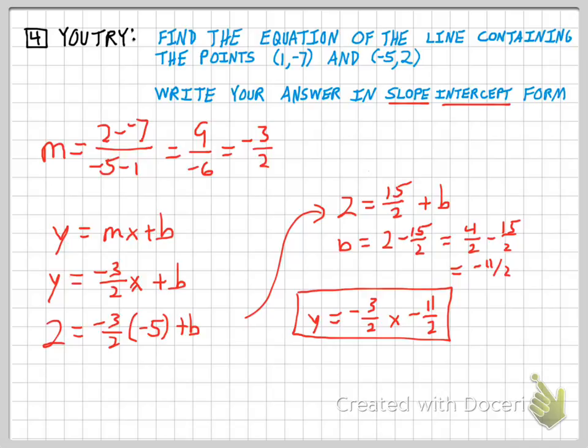Okay, hopefully you got a final answer of y equals negative three-halves x minus eleven-halves. First step is to find the slope. Since I have two points on the graph, I can use my slope formula to do that. Negative three-halves is my slope.